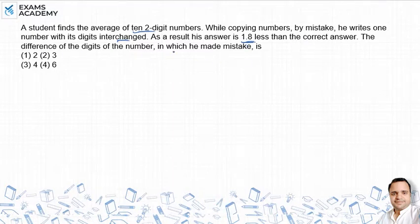हमसे पूछता है कि जो वो दो numbers है मतलब जो number है उसके digits का difference बताओ क्या होगा. हम सबसे पहले इस difference का use करेंगे. 1.8 का average में difference आ रहा है, अगर sum में difference निकालना हो तो इसमें 10 से multiply करेंगे मतलब यह होगा 18.